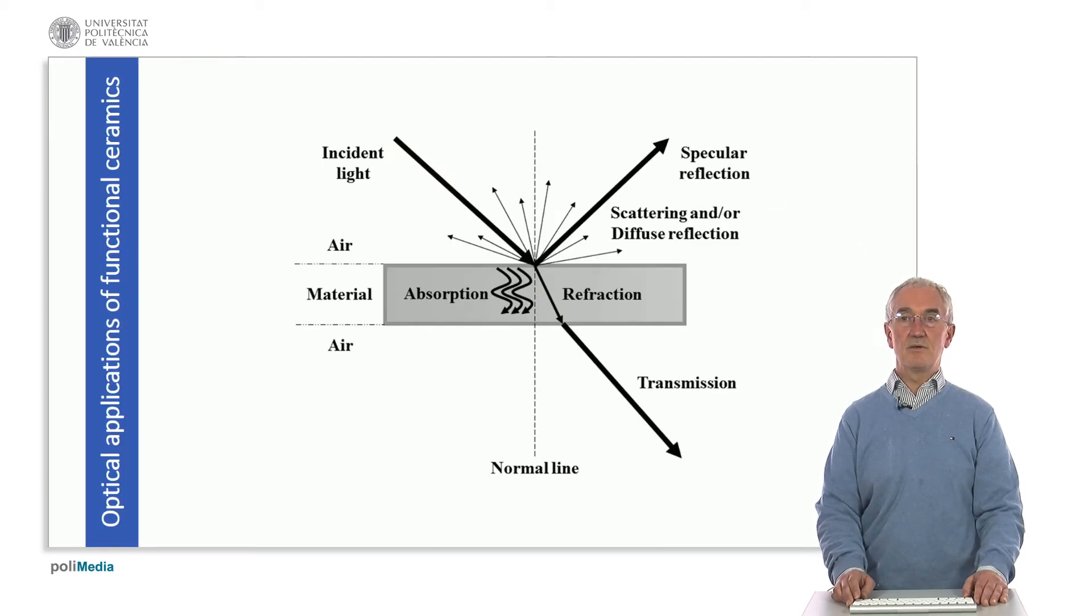The basis of optical ceramics is how light is interacting with even thickness of the material. On a completely transparent material, we have no absorption of light, very small or no reflection.